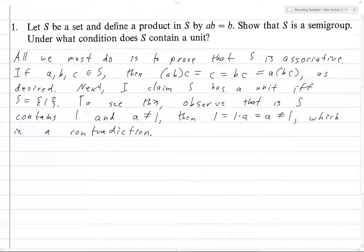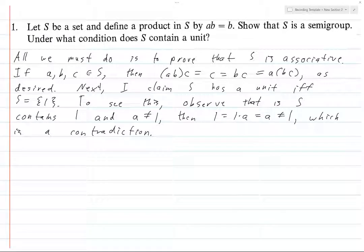This proves that certainly if S is just a singleton set {1}, then S has a unit. Conversely, if S has a unit, then it has to contain one—it has to be just a set with one element. Because if you assume for contradiction otherwise, then this thing pops out. That completes the proof.